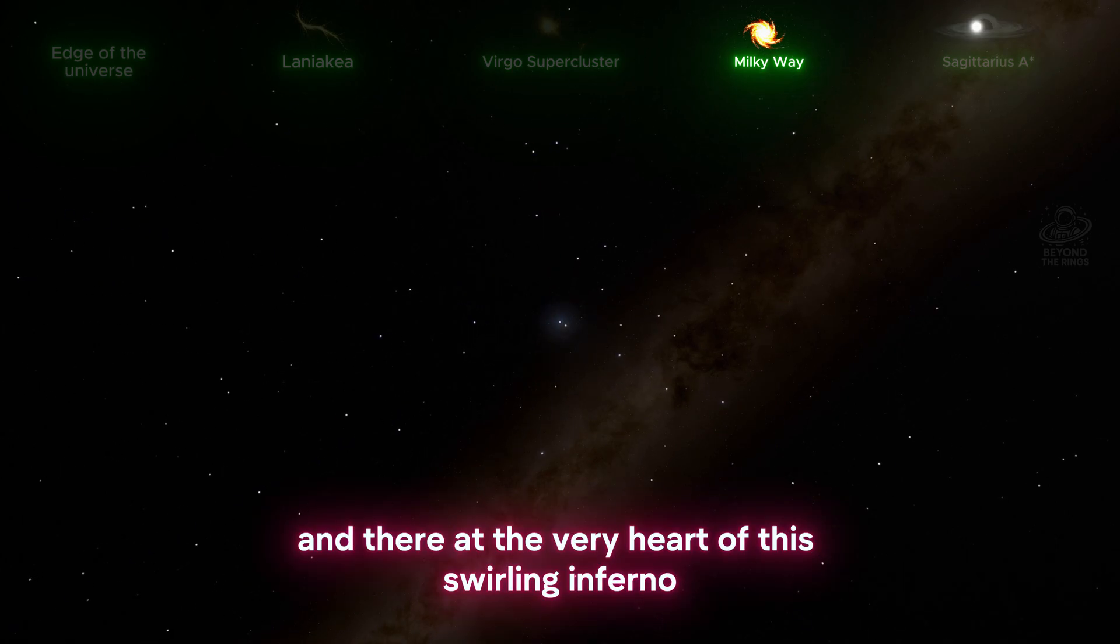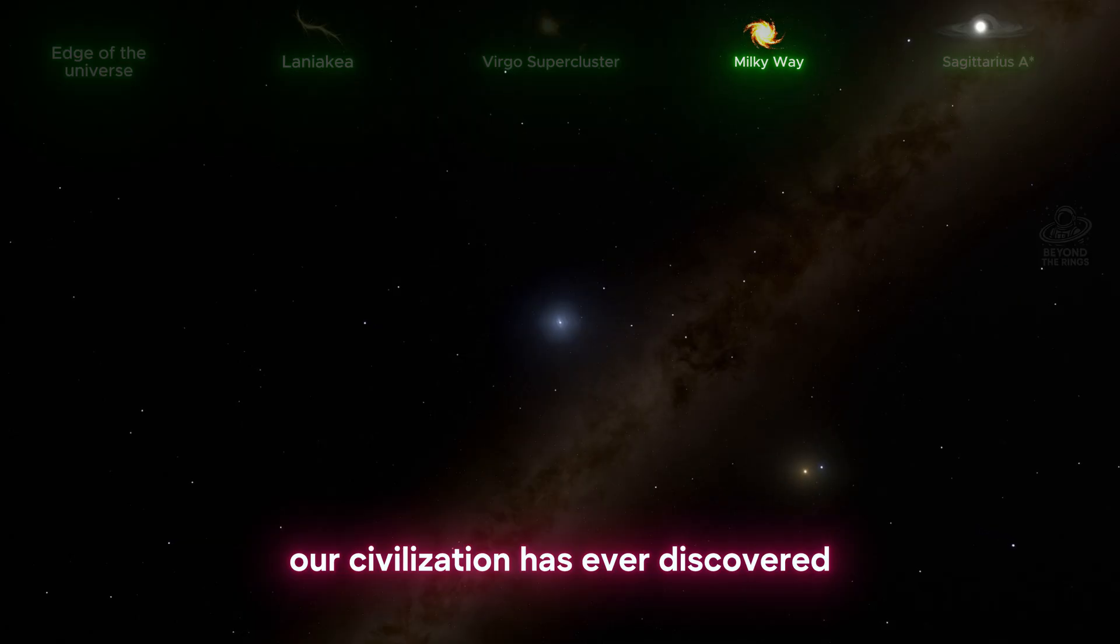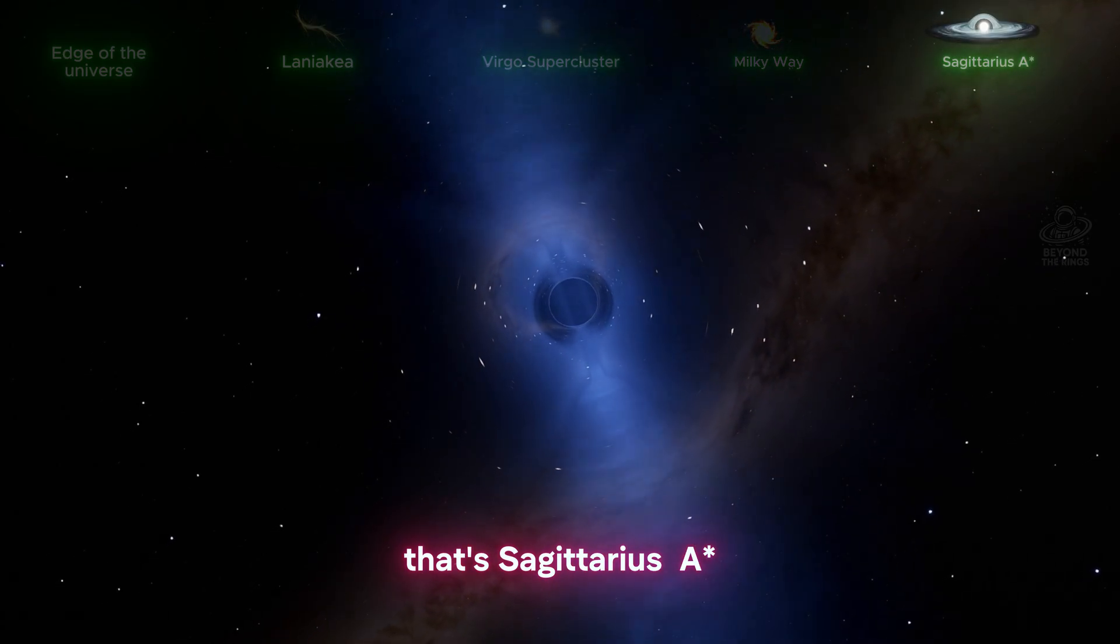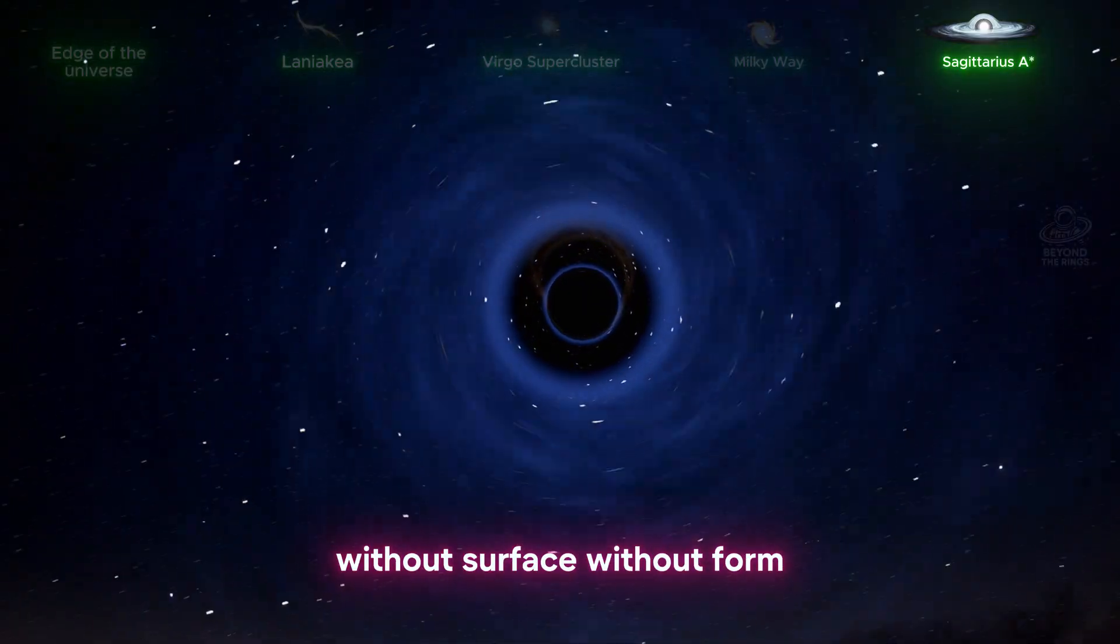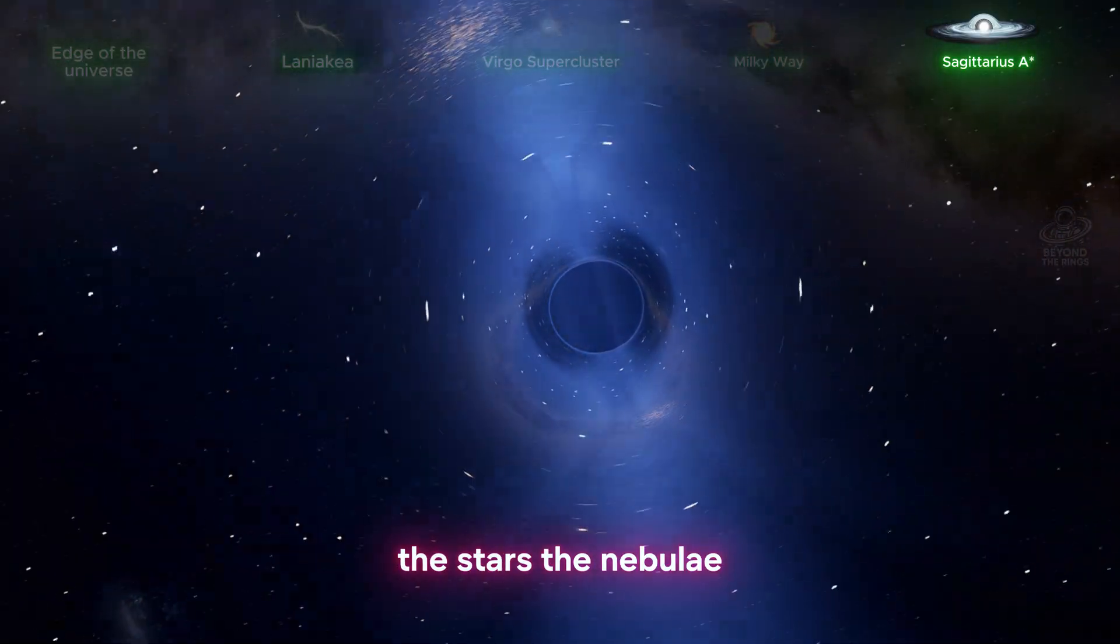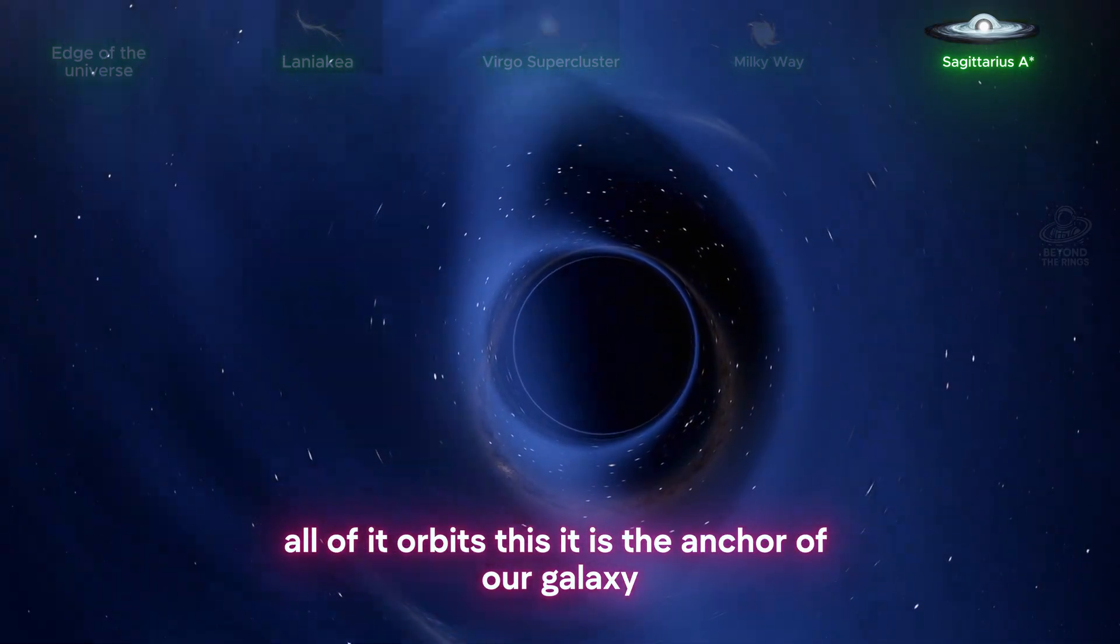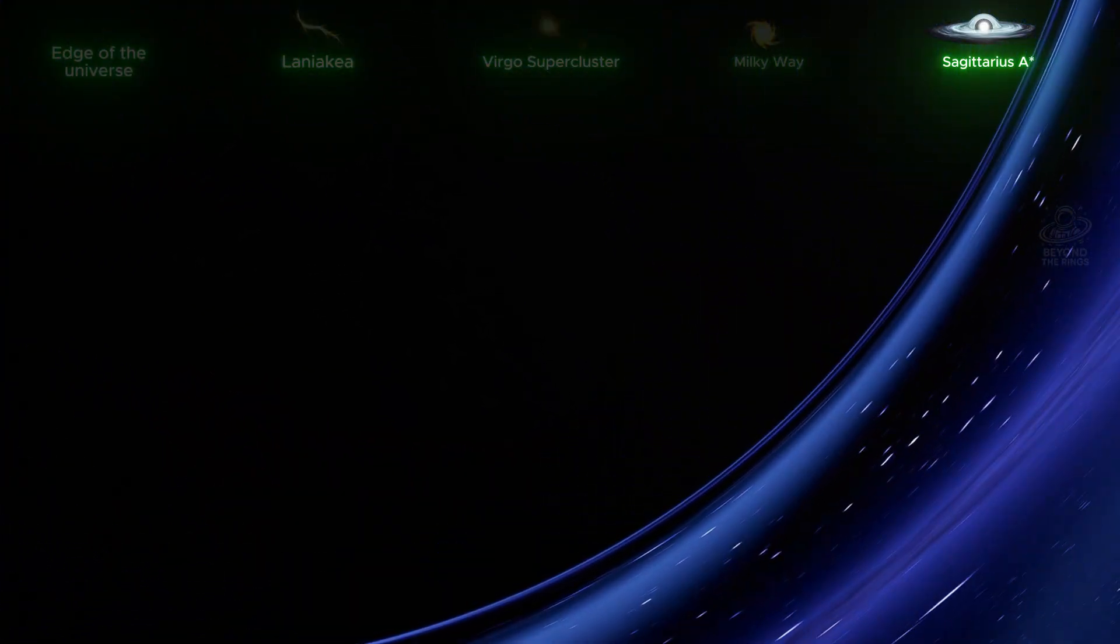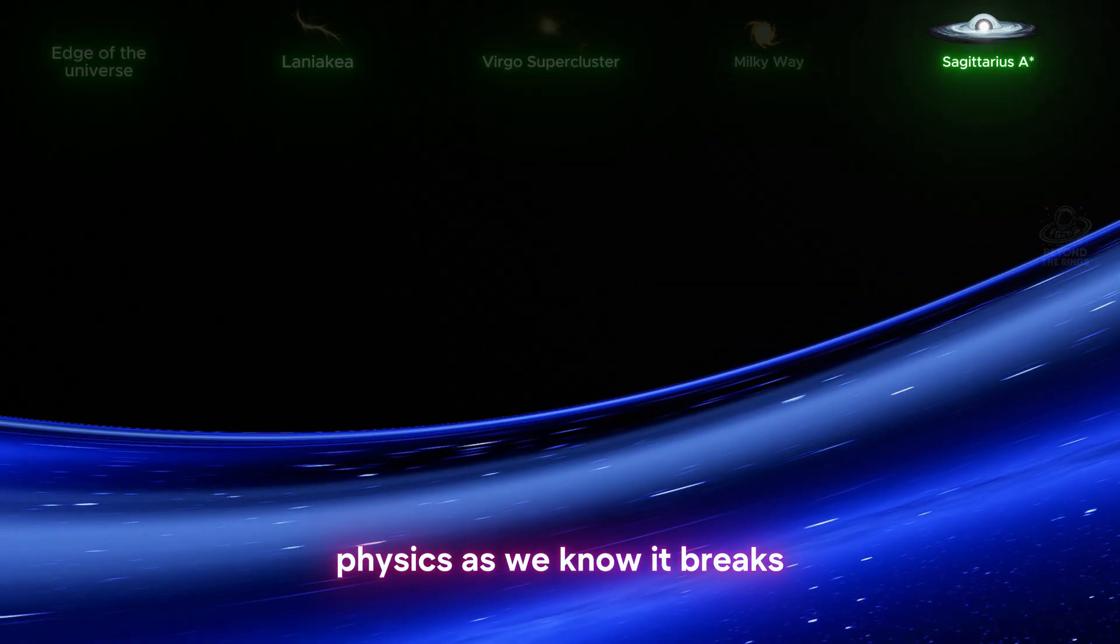And there, at the very heart of this swirling inferno, lies the most mysterious object our civilization has ever discovered. That's Sagittarius A* - four million suns compressed into a single point, without surface, without form, without mercy. Everything we have seen so far - the stars, the nebulae, the arms, the bulge - all of it orbits this. It is the anchor of our galaxy, its engine, its sculptor, its shadow. Here, reality and time stop. Physics as we know it breaks. This is not a shadow, this is a hunger written into spacetime.